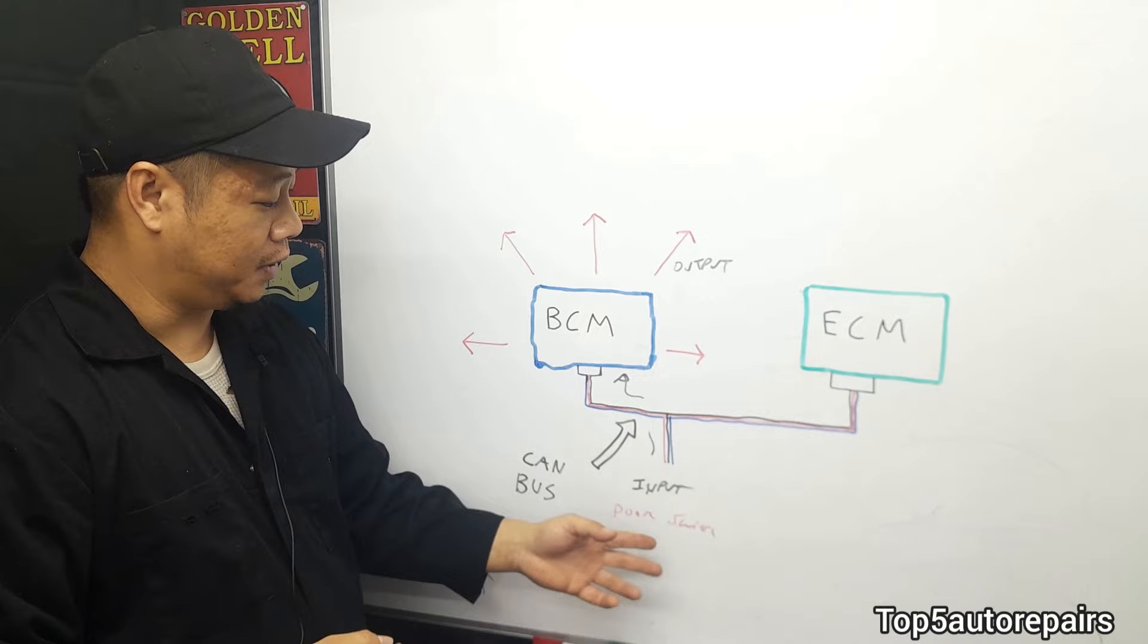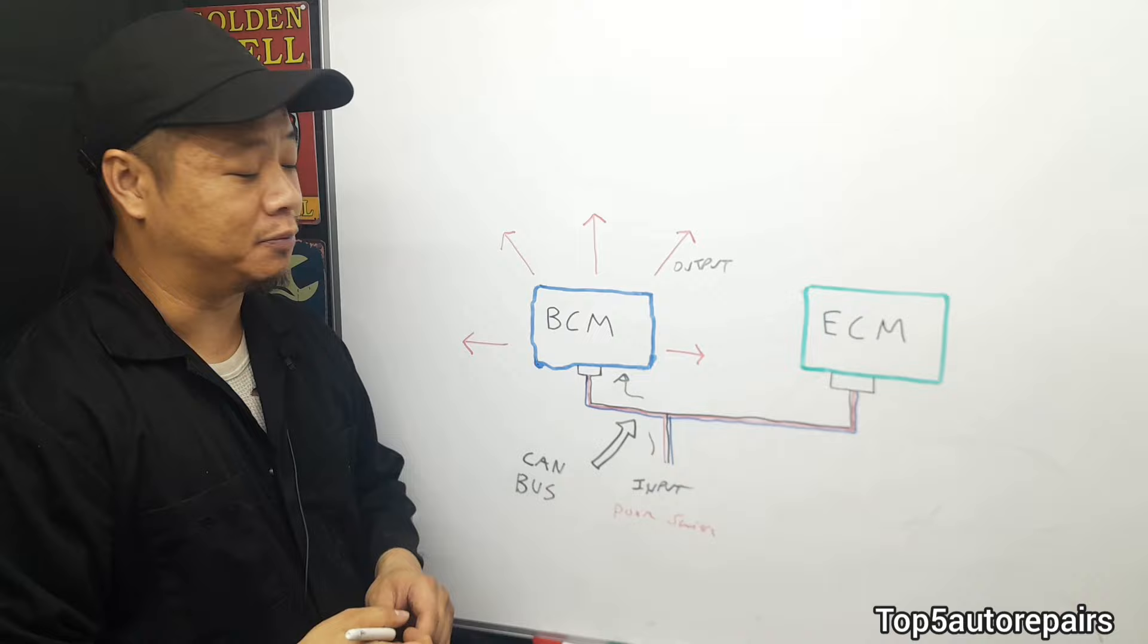So let's say you press the door switch and the BCM happens to be faulty or it is failing and working intermittently. When you press the door switch, the door may not lock or unlock.